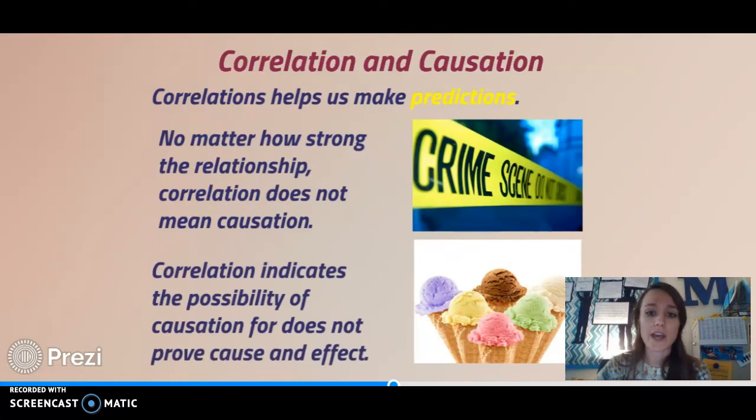So you cannot prove anything from a correlation. You can predict that one will increase or one will decrease because you know there's a relationship, but you can't tell why it's happening. That's a really important factor.